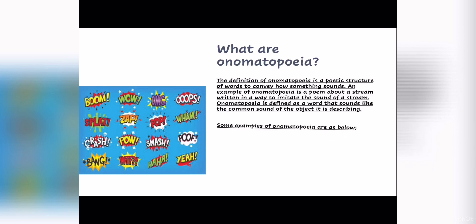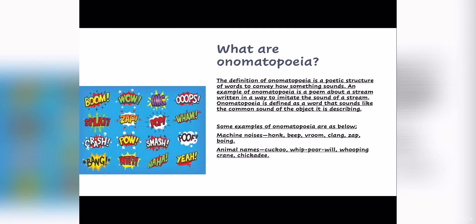Some examples of onomatopoeia are as below. Machine noises: honk, beep, vroom, clang, zap, boing. Animal names: cuckoo, whip-poor-will, whooping crane, chickadee. Impact sounds: boom, crash, whack, thump, bang.